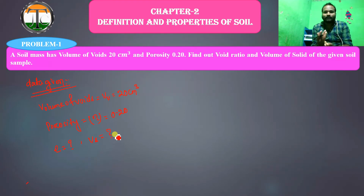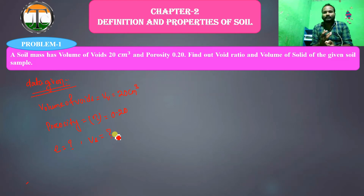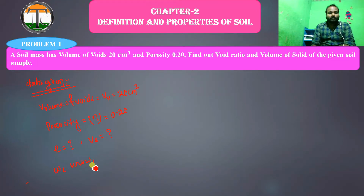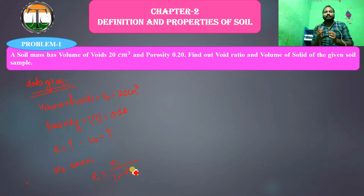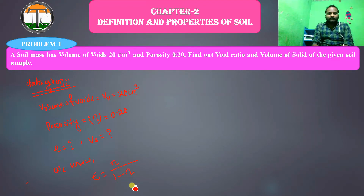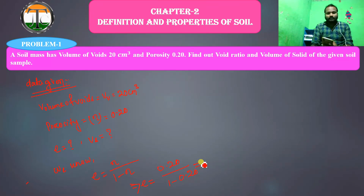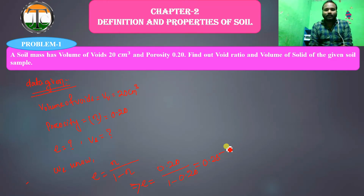In our previous lecture video we already discussed the relation between void ratio and porosity. We know the formula: e equals eta divided by 1 minus eta, and that is the most important formula. Putting in the value, e equals 0.20 divided by 1 minus 0.20, and that equals 0.25. So we got the void ratio as 0.25.